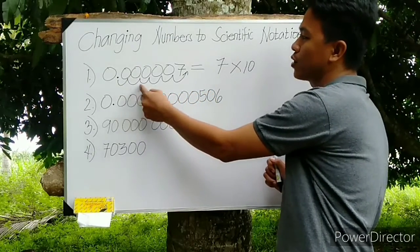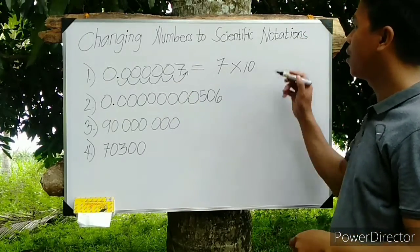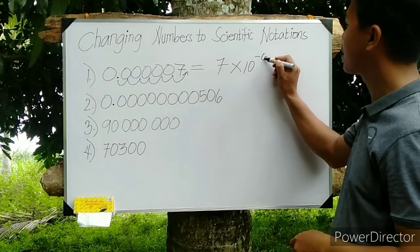The integer is based on the movement. How many movements do we have here? So we have 1, 2, 3, 4, 5, 6. So therefore, the power is negative 6.